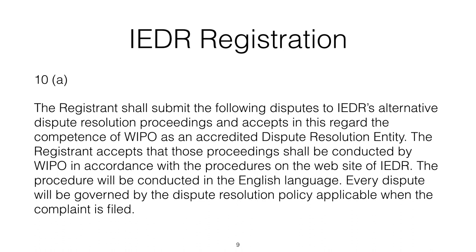For example, if you register a .ie domain name, the registrant shall submit disputes to IEDR's alternative dispute resolution proceedings and accepts the competence of the WIPO as an accredited dispute resolution entity. The WIPO is the World Intellectual Property Organization and this is a service that they offer. The proceedings shall be conducted by WIPO in accordance with the procedures on the IEDR website, and shall be conducted in the English language.